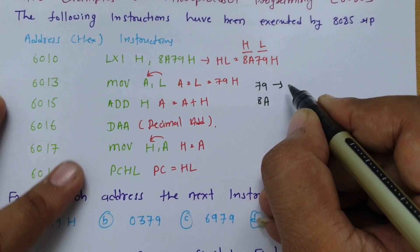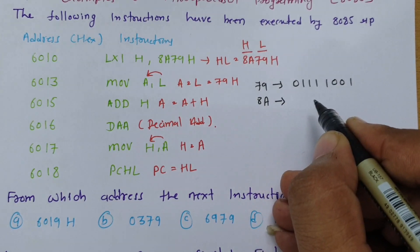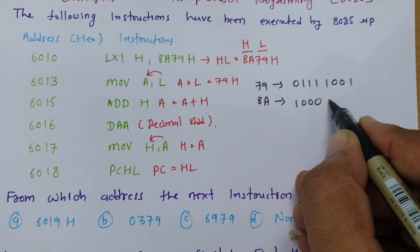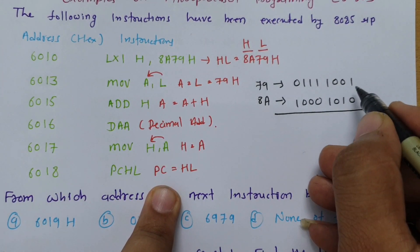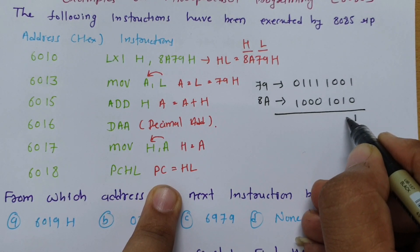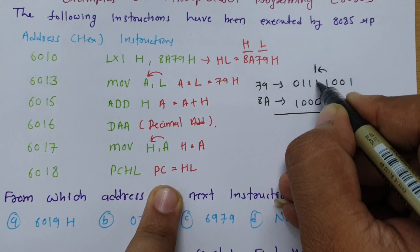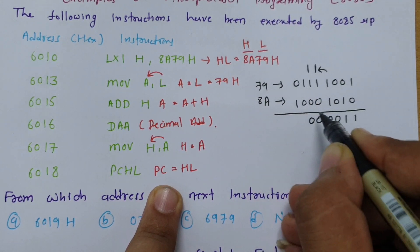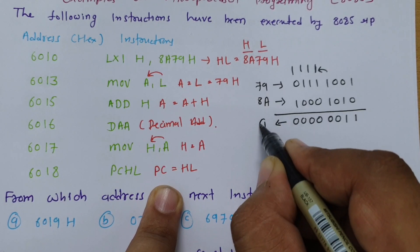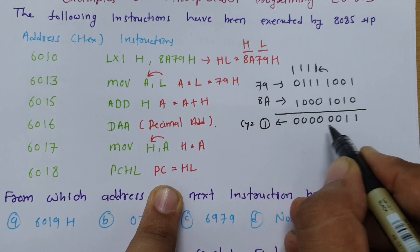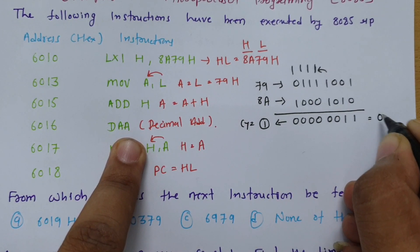Writing in bits: 7 is 0111, 9 is 1001, and 8 is 1000, A is 1010. Performing the binary addition bit by bit: 1+1=0 carry, 0+1=1, 1+1=0 carry, 1+1=0 carry, and so on through each bit position, propagating carries through the upper nibble as well.